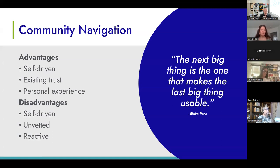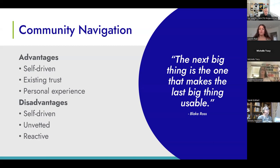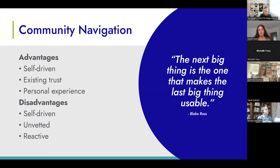The first topic is community navigation. There are definitely some general advantages and potentially disadvantages to this type of approach. Some advantages are that it is self-driven, so there is some type of commitment already established with the person living with MS — that this is a resource they're in need of and they're interested in finding help for. There's also a level of existing trust. If it's a family member, community member, or faith-based personnel they have a trusted relationship with, there's a built-in trust in that recommendation and follow-through. Often these recommendations are made off of personal experience, which can be really reassuring and comforting.